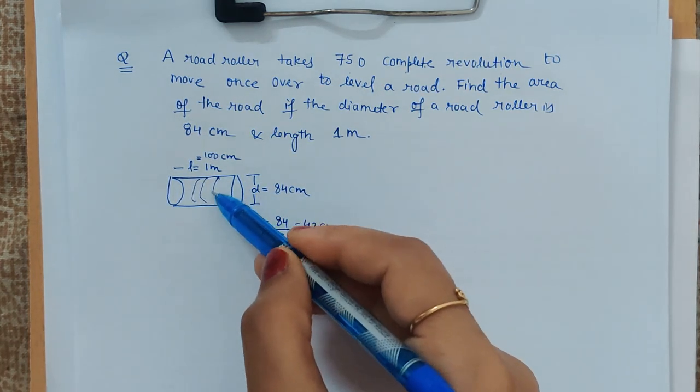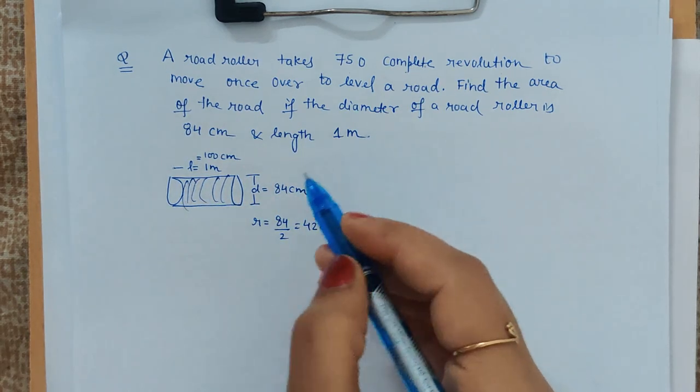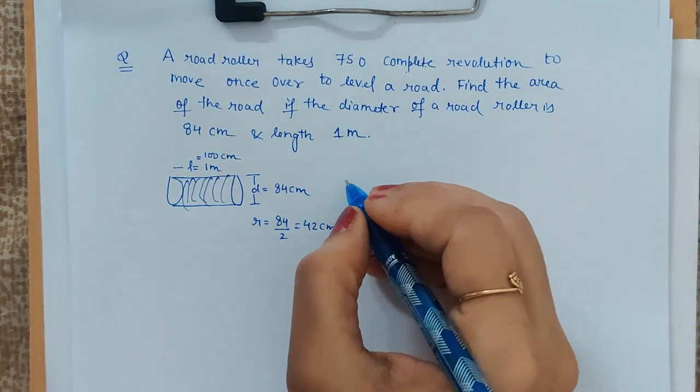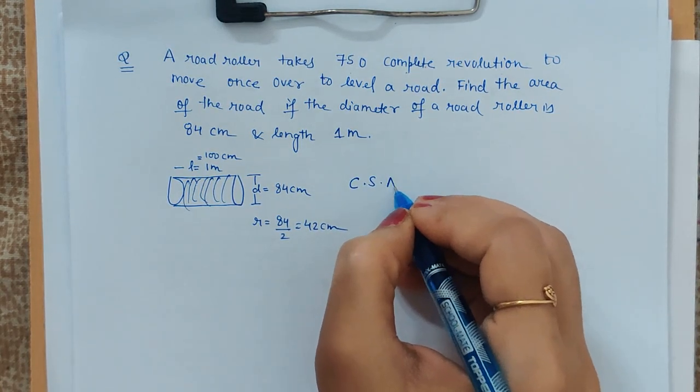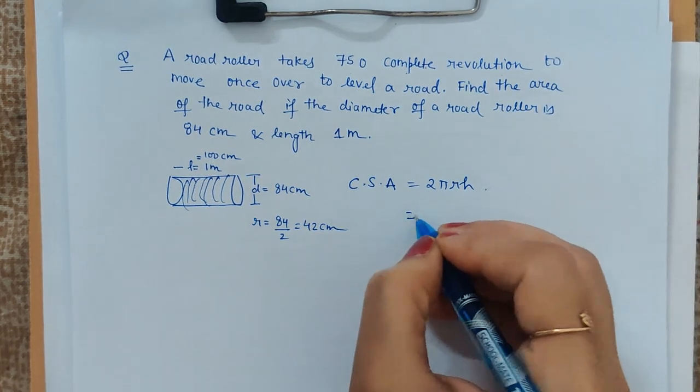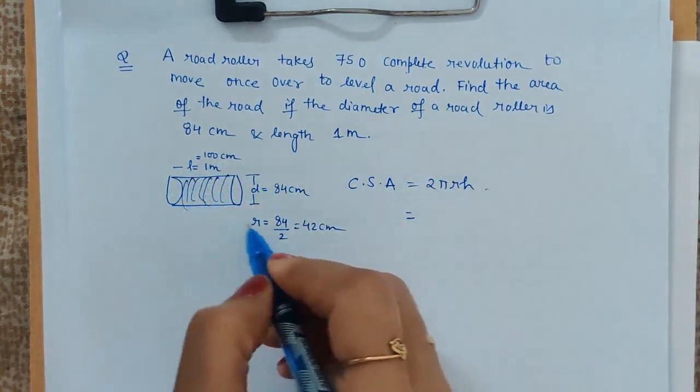When the road roller revolves itself one time, that area is its curved surface area, which is 2πrh, and we have all the values of this road roller.